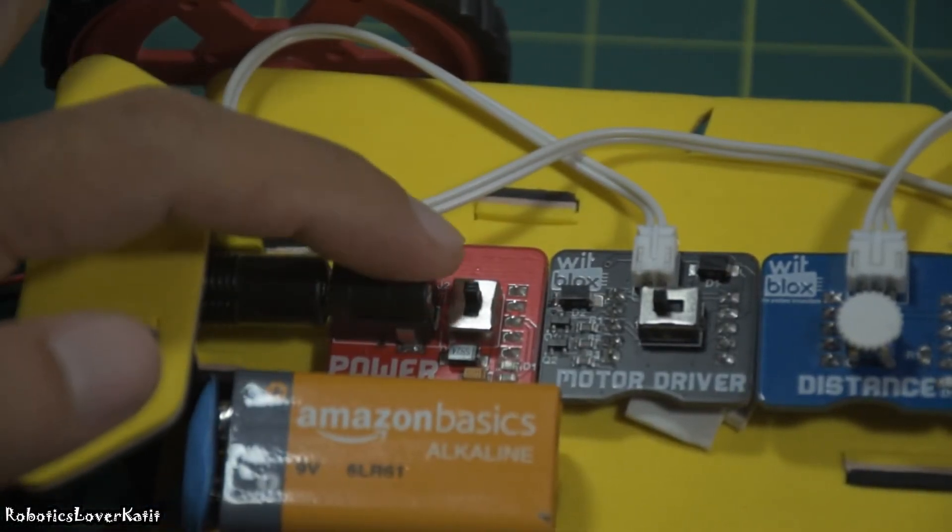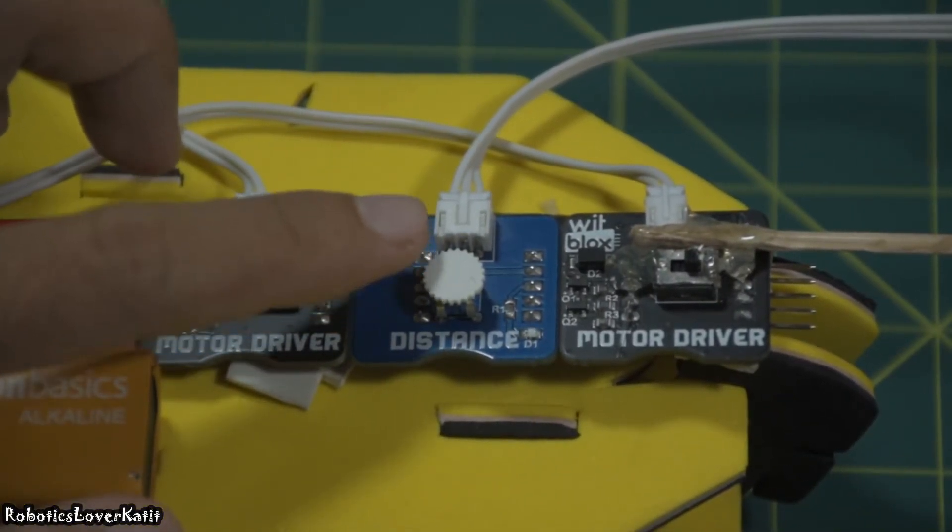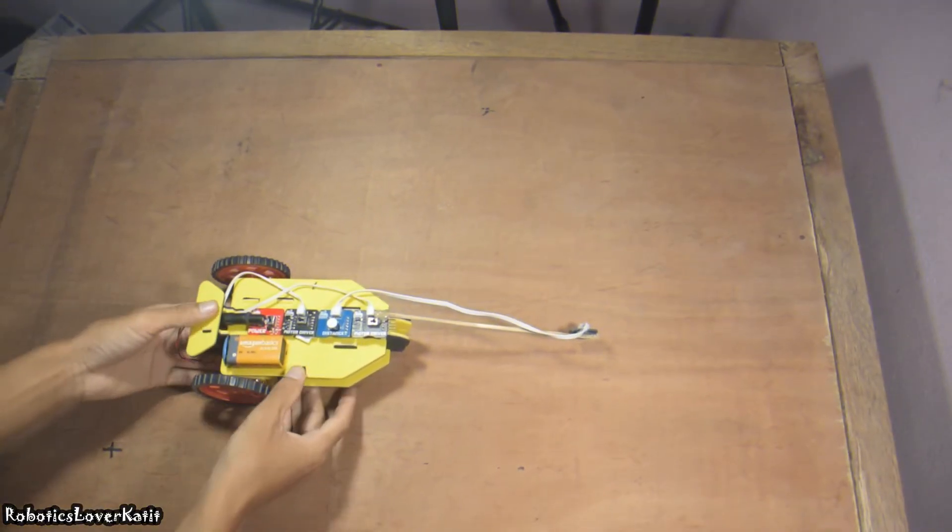This is the assembled cliff avoider robot. Use this knob to set the distance of the surface of the table from the robot. Now let's see how it works.